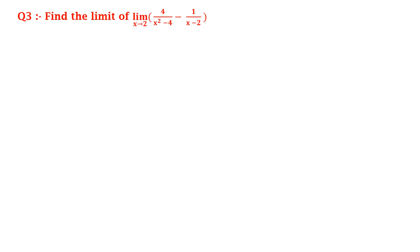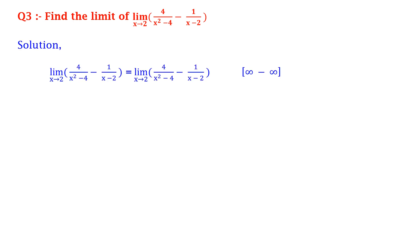Third, find the limit: limit x tends to 2 of [4/(x² - 4) - 1/(x - 2)]. Here, limit x tends to 2 of [4/(x² - 4) - 1/(x - 2)] is of the infinity minus infinity type.